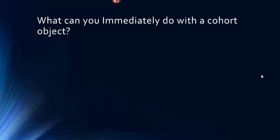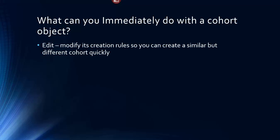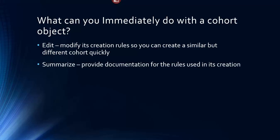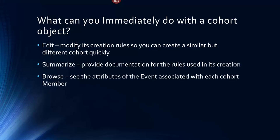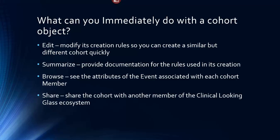What can you immediately do with a cohort object? You can edit it — modify its creation rules to create a similar but different cohort quickly. You can summarize it, which provides documentation for the rules used in its creation. You can browse it, allowing you to see the attributes of the event associated with each cohort member. And you can share it with another member of the Clinical Looking Glass ecosystem.